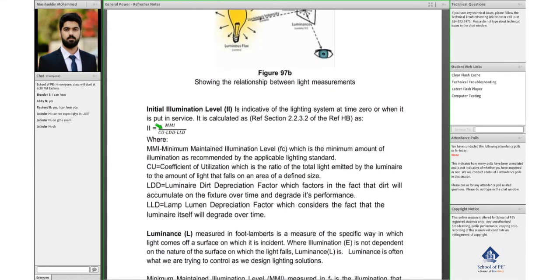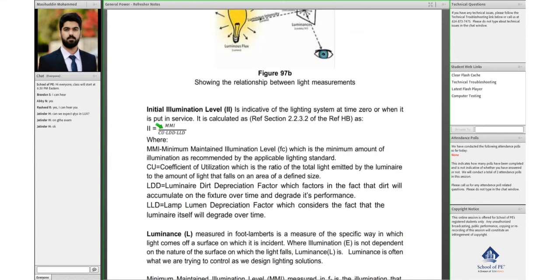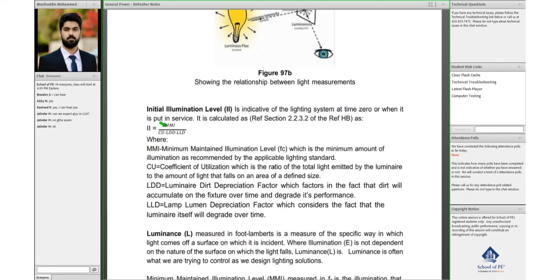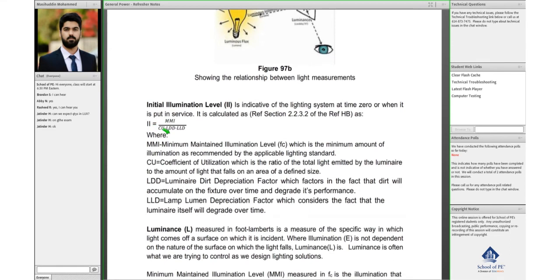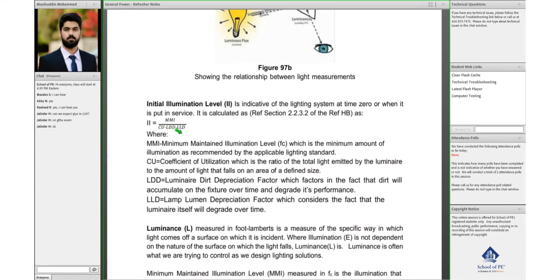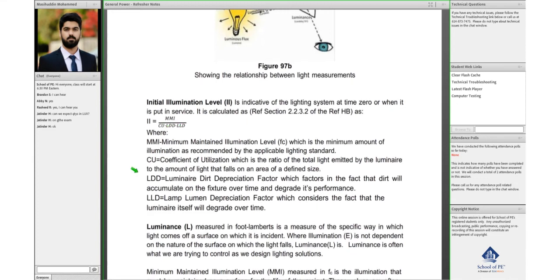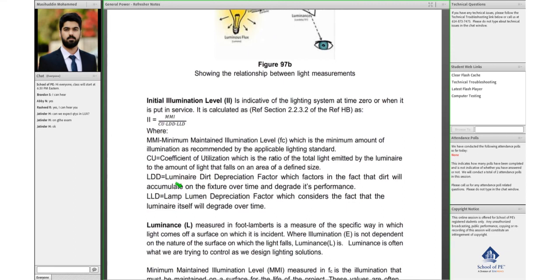The MMI is a recommendation by whatever standard or reference you're following, then divided by the coefficient of utilization. Then there are some depreciation factors. Any luminaire could have dirt depreciation factor with time. There could be dirt accumulation on it and its performance could degrade, so you have to factor in that.